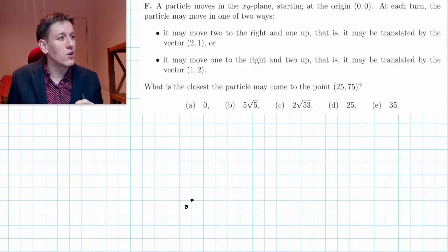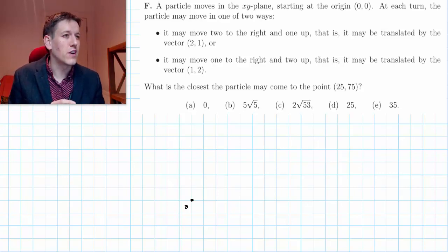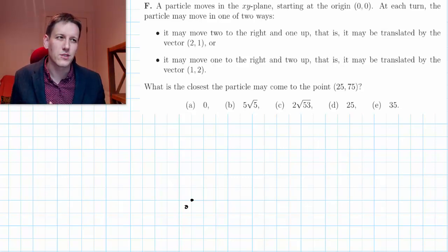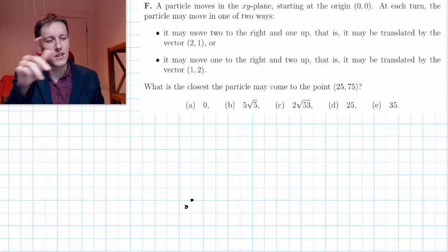When it says what's the closest the particle can come to the point (25, 75), we don't have to think about whether there's a complicated route to get to exactly the point and all that sort of stuff. The distance would just be zero if we could just go straight to the point by doing a different path.